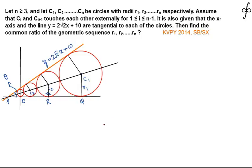Let's discuss this problem which appeared in KVVY 2014. Let n ≥ 3 and c1, c2, ... up to cn be circles with radii r1, r2, r3 up to rn respectively. Assume that ci and ci+1 touch each other externally for i starting from 1 to n−1. It is also given that the x-axis and the line y = 2√2·x + 10 are tangential to each of the circles.